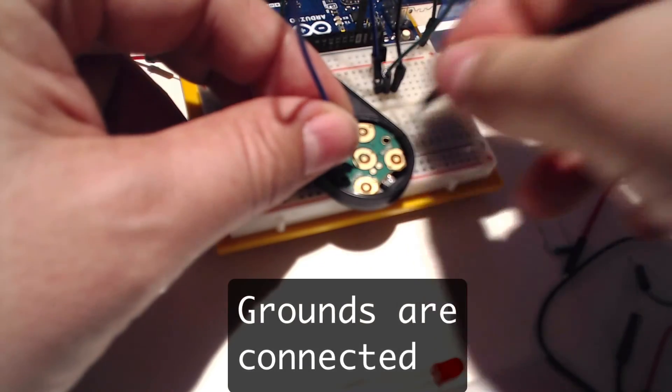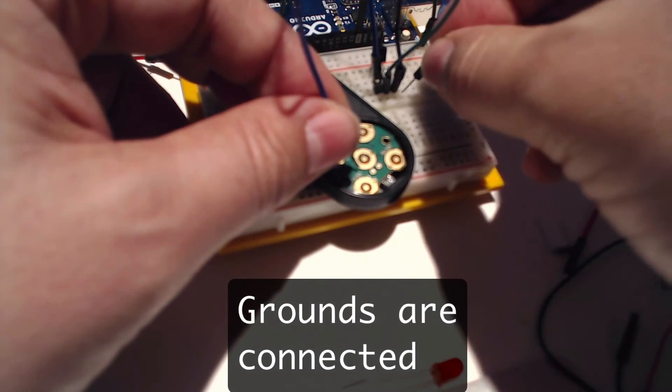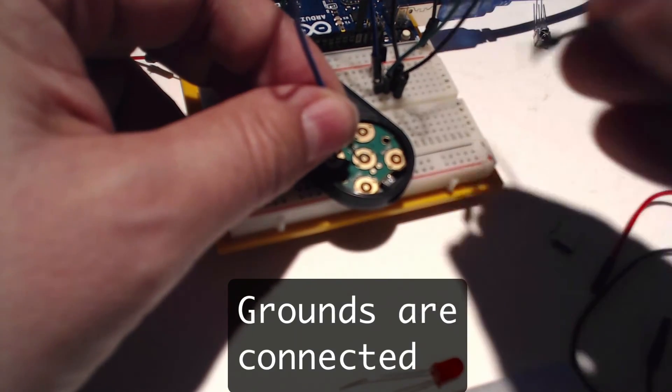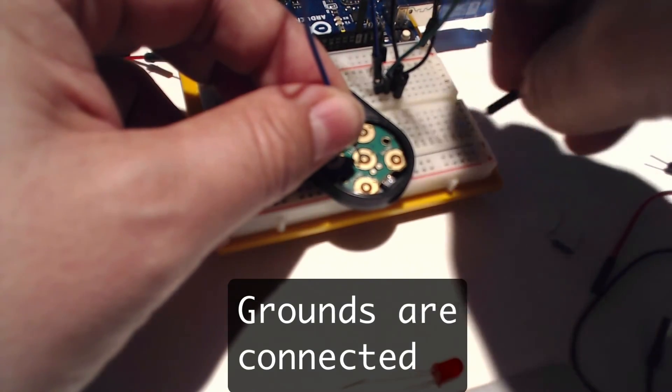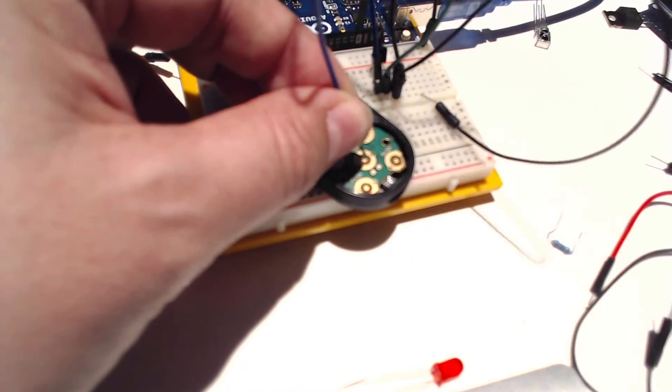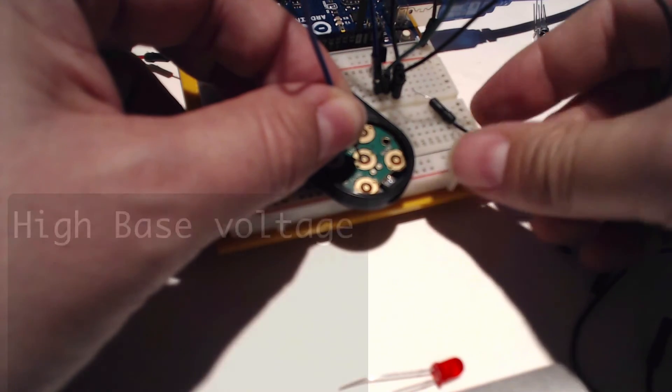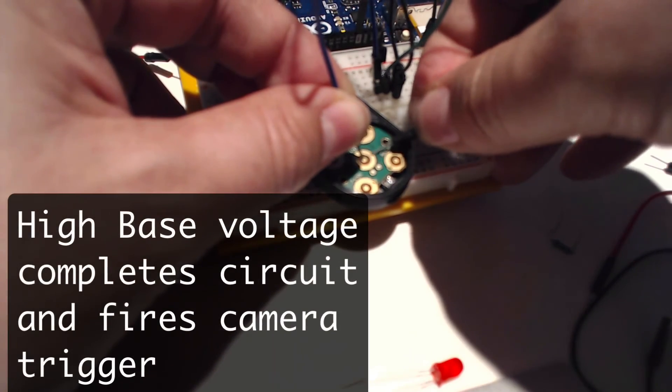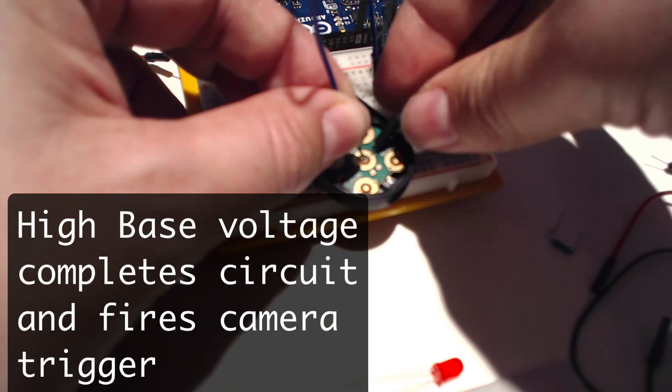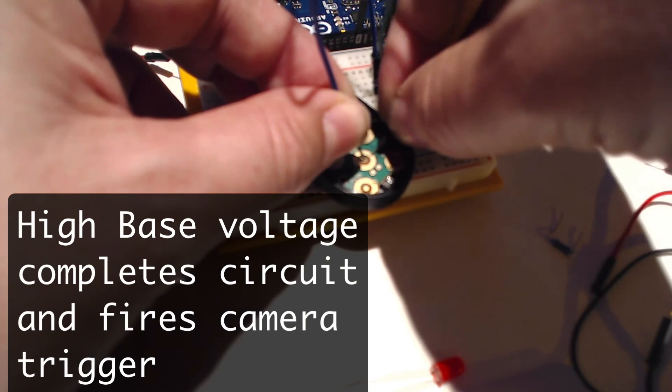The transistor can take the place of that button. We connect to ground so all the grounds are connected. When the signal is high on the transistor, it makes the connection and sends the signal out of the infrared LED to the camera.